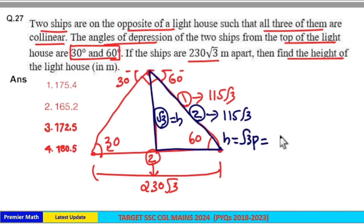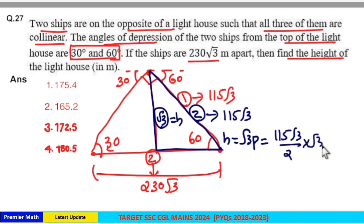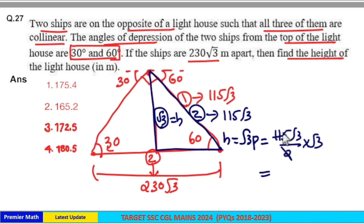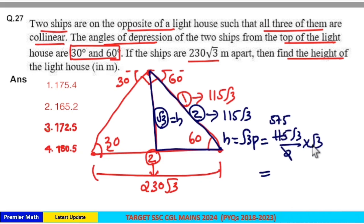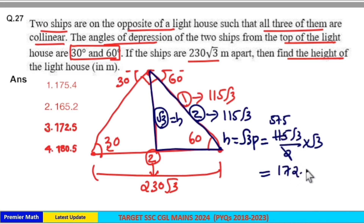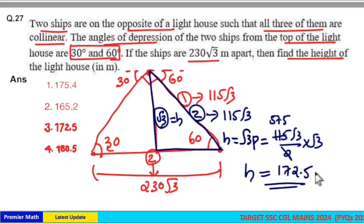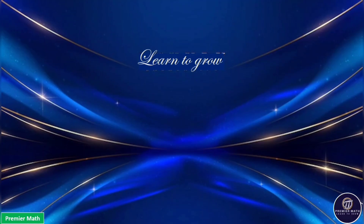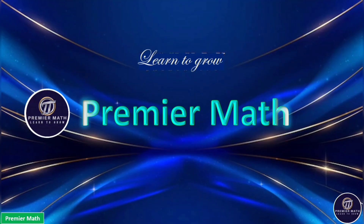One part is 115√3/2, so the √3 part (height) equals (115√3/2) × √3. Now 115 divided by 2: 50 times in 100 and 7.5 times in 15, giving 57.5. Then 57.5 × 3 equals 150 + 21 + 1.5 = 172.5. So the height of the lighthouse is 172.5 meters, which is option 3.